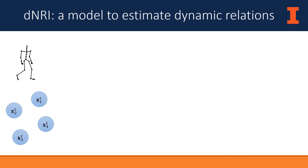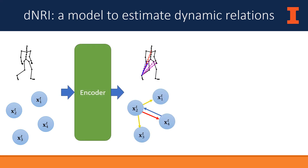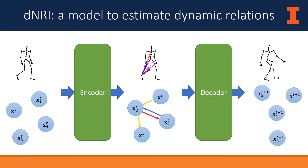Here is an overview of how DNRI works. Given an input trajectory, we want to predict a distribution over relation types at every time step. During training, this is done using an encoder, which utilizes information from both the past and the future of the sequence to estimate the relation distribution. After predicting these distributions, they are used by the decoder to reconstruct the input trajectory, shifted forward one point in time.